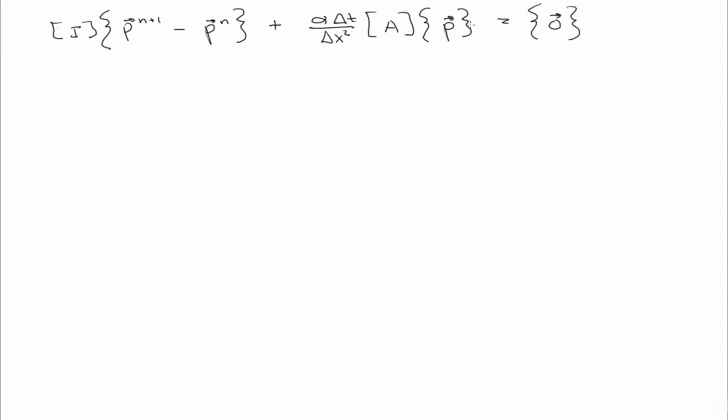So now notice, over here on this term, we don't have a superscript on p. So it's actually up to us to decide how we want to discretize this in time. Do we want to choose to evaluate this p at the time step n plus 1 or we want to do it at the time step n? Well, let's see what happens if we choose this to be n.